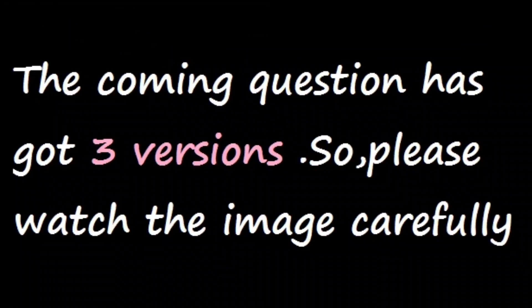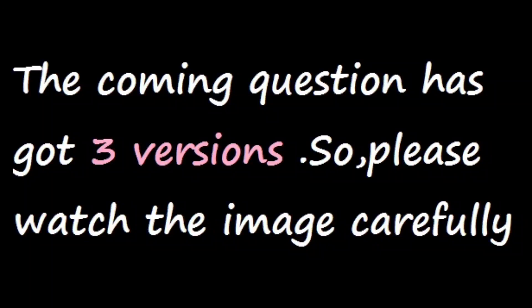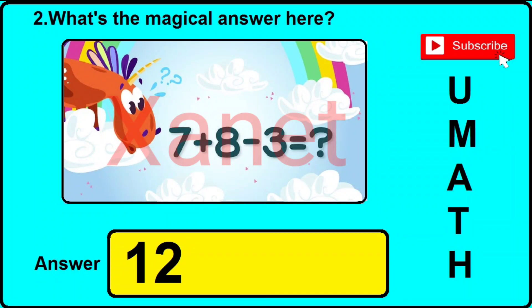Question number 2 has got three different versions or types, so you need to watch the image and just click the answer that I have shown here. For example, in version 1 of this question, just watch the image — it is written here: 7 plus 8 minus 3 equals what. Then the correct answer will be 2 bell, so you need to click 2 bell for this sort of image.